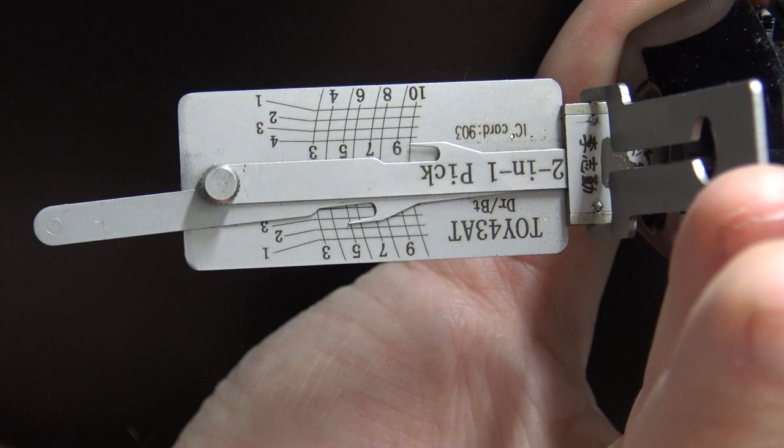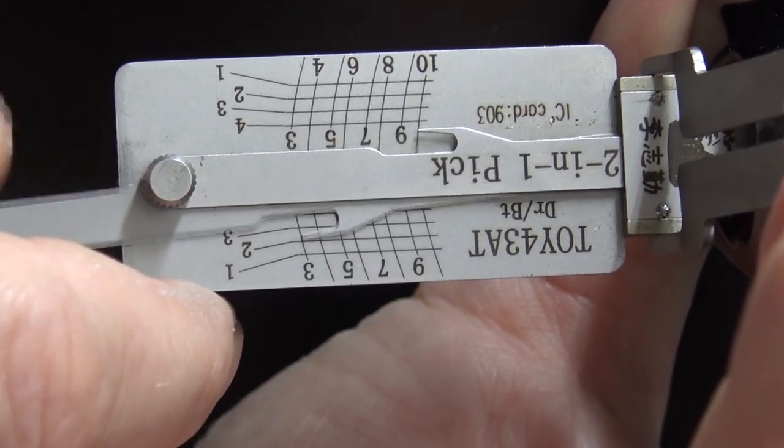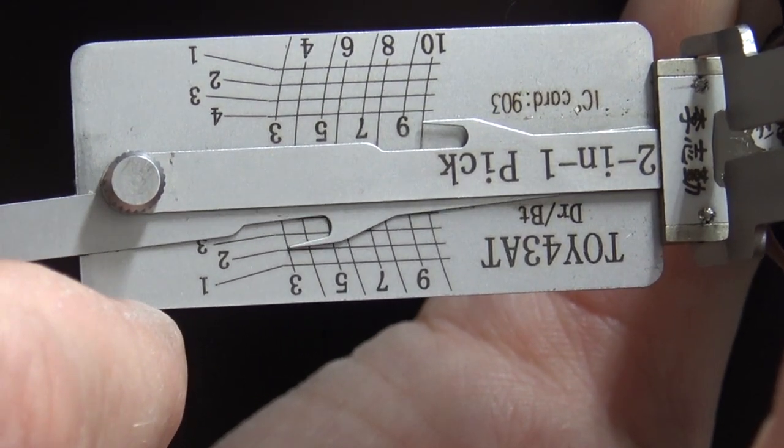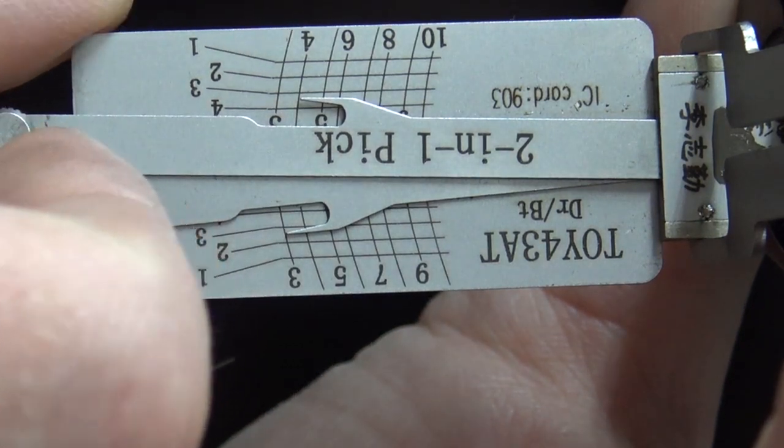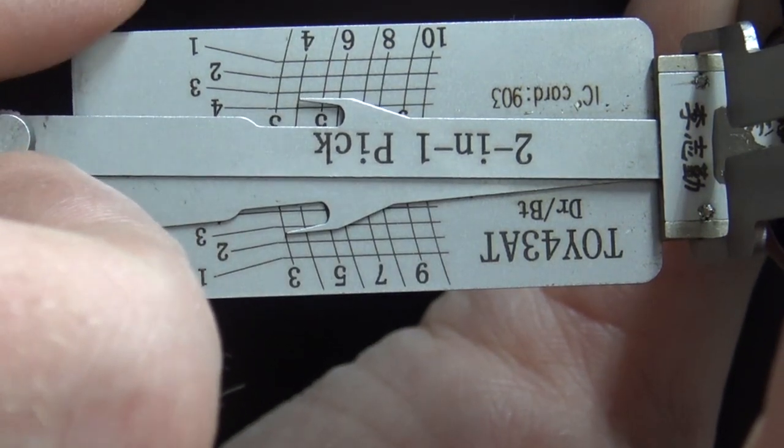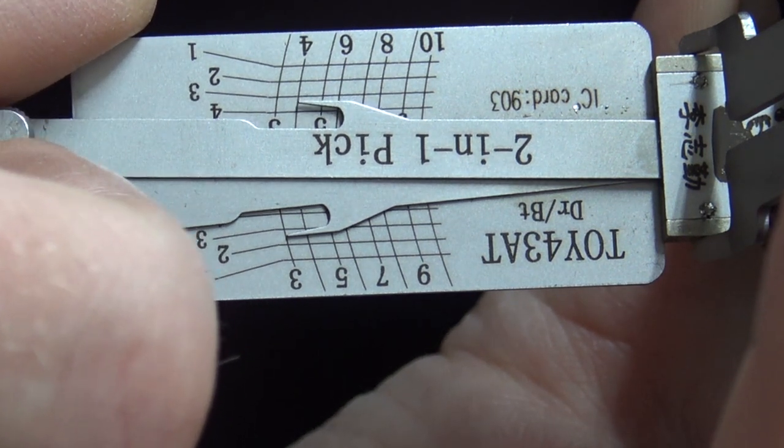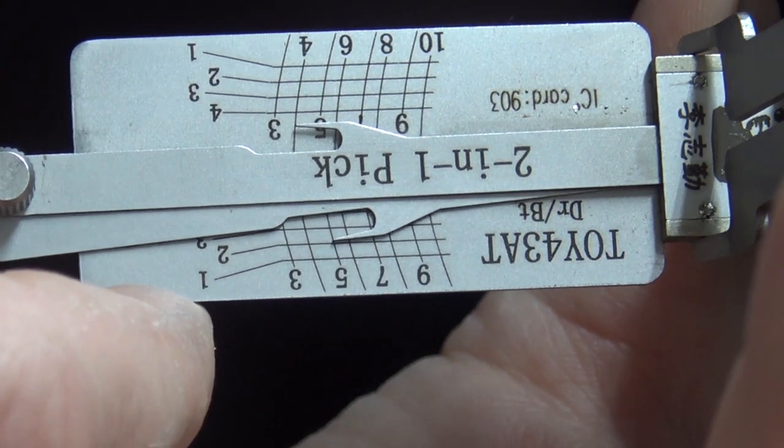And then from here we should be able to actually decode the lock. So we had odd numbers going down here. So we'll start on number three going down. And that's going to be a two. And then number four going up is going to be a three. Five going down, two.